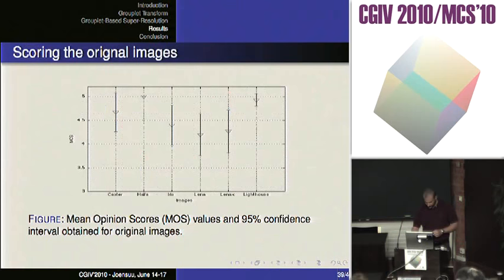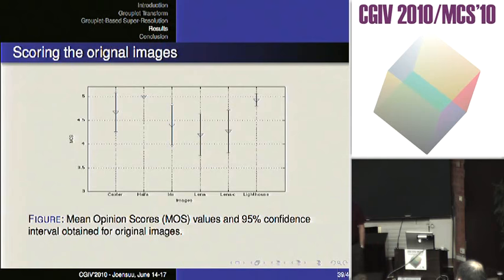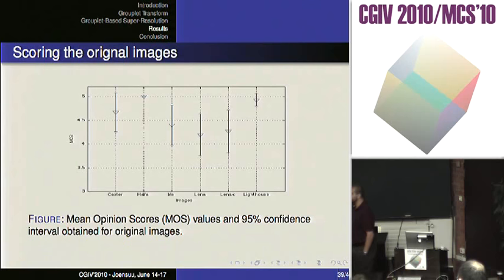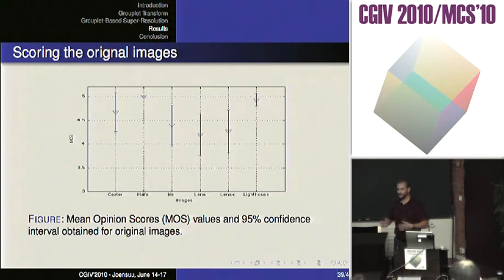We also scored the original images. For Lighthouse and Haifa, there is no problem — the images are scored as very good. But for Lena, you can see that there are some acquisition artifacts that have been evaluated as degradation by observers. These values can be used in order to redefine the scores, which means that for Lena, the scores that observers gave need to be recomputed regarding the original evaluation, because the Lena content already had some impairments.